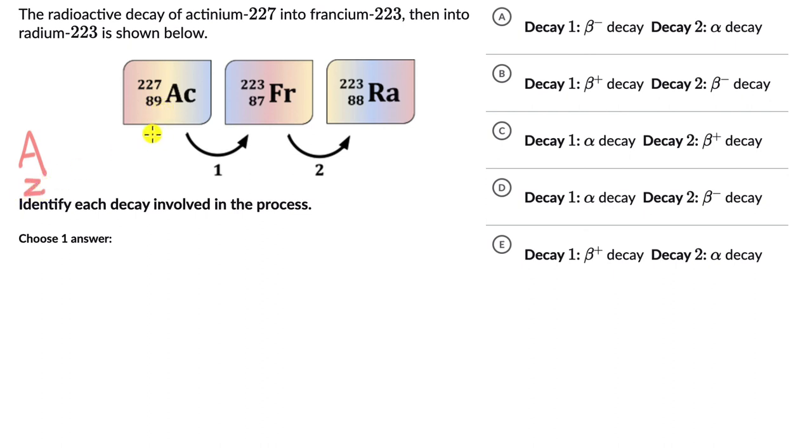We can also try to recall what all decays do we know. One of them is definitely alpha decay. An alpha particle is really a helium nucleus, so atomic number of 2 and mass number of 4. In the case of alpha decay, the mass number decreases by 4 and atomic number decreases by 2.